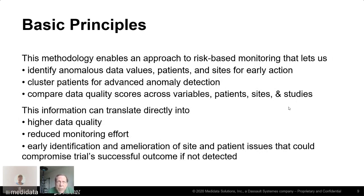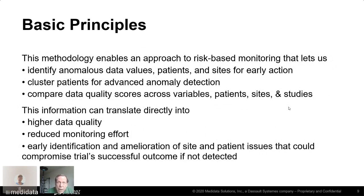This methodology enables an approach to risk-based monitoring that lets us identify anomalous data values, patients, and sites for early action — finding and fixing them at the earliest stage of the trial possible, not after the fact when it's too late. We want to cluster patients for advanced anomaly detection, compare data quality scores across variables, patients, sites, and studies, which will translate directly into higher data quality, reduced monitoring effort, and the ability to address early site and patient issues that could compromise the trial's success.